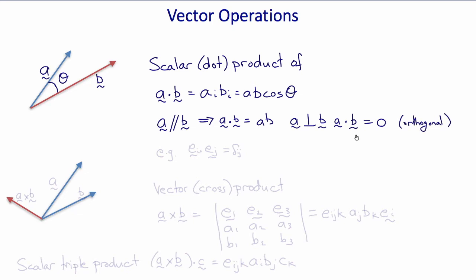For example, if we take the dot products between all of the base vectors with each other, then we get ei dot ej which is delta ij.